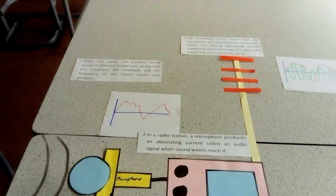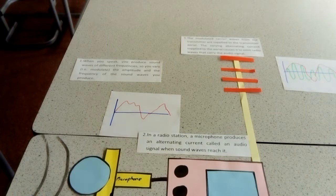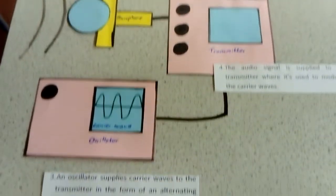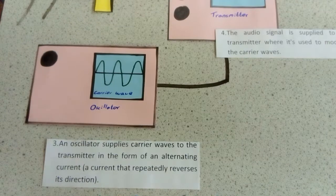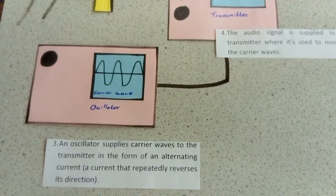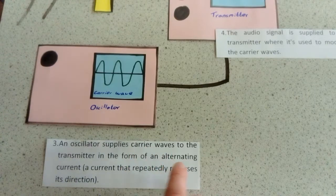Also in the transmitter, you get a carrier wave. This is generated by an oscillator. A carrier wave is the wave that carries the signal in the form of the radio wave. An oscillator supplies carrier waves to the transmitter in the form of an alternating current.